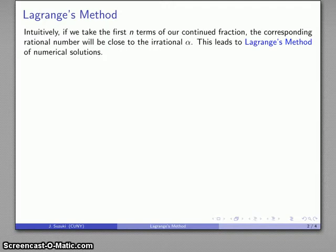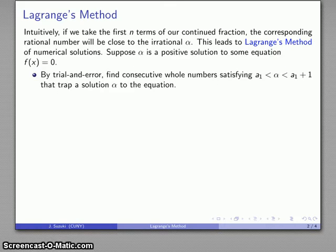Intuitively, what we're going to do is find a continued fraction expansion for a solution to our equation. We're going to do this as follows: suppose alpha is the solution to some equation f(x) = 0.